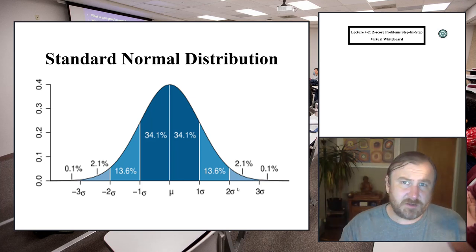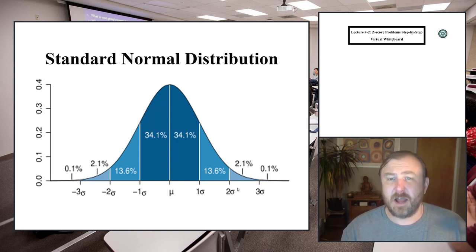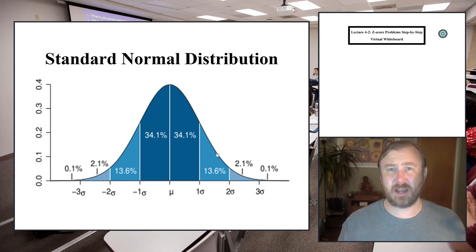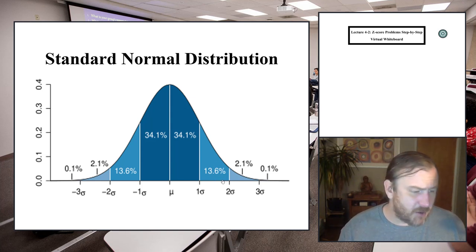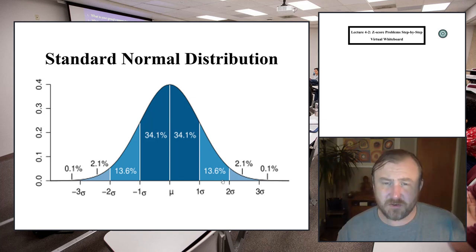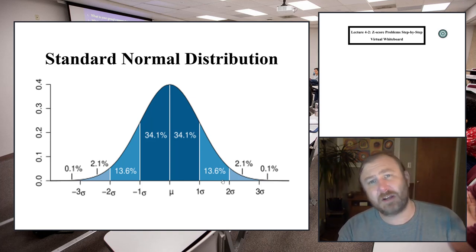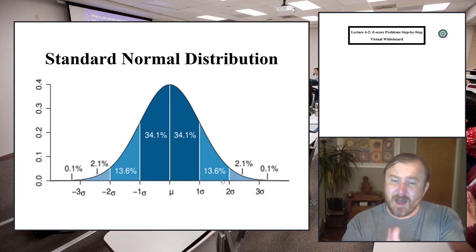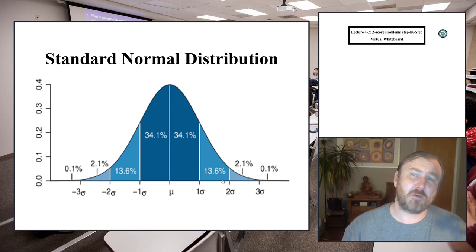The standard normal distribution allows us to have much more precision. We can find specific information about, say, what 1.72 standard deviations above the mean would be. We can take our raw data, convert it into a z-score, and then determine what proportion is above or below. Or we can take a proportion and find the z-score that matches it and convert that back into our raw score format.